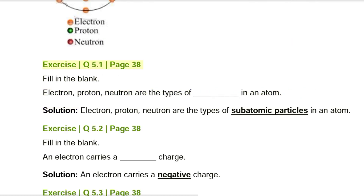Exercise Q5.1, page 38. Fill in the blank: Electron, proton, neutron are the types of _______ in an atom. Solution: Electron, proton, neutron are the types of subatomic particles in an atom.